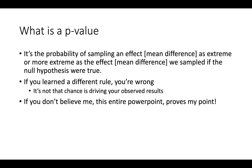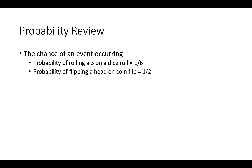It's the probability of sampling an effect — today's examples are all mean differences — as extreme or more extreme as the effect, the mean differences for today, that we sampled if the null hypothesis were true. If you learned a different rule, you are just wrong. It's not the probability that chance is driving your observed results — that is incorrect. The entire PowerPoint proves my point. Let's move on.